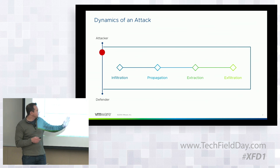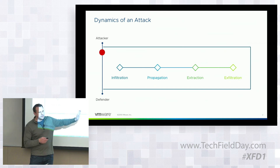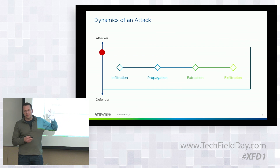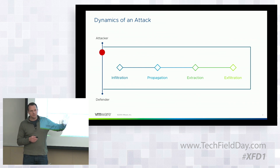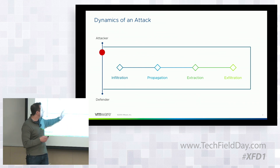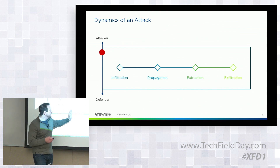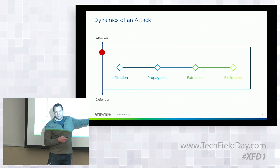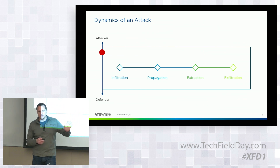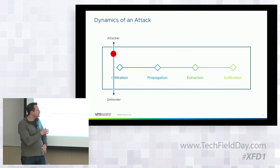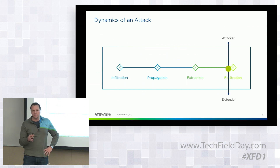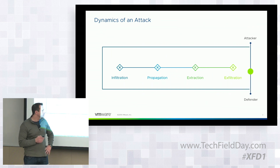We want to deal mostly with things that are in the propagation and extraction phases of attacks, rather than trying to deal with pure infiltration events. We get that question a lot — do you stop a buffer overflow, do you stop a SQL injection attack? The goal is not necessarily to stop those initial infiltration events, but instead stop the ability for an attacker to propagate the attack and extract data afterwards, which should be an easier place for the defender to defend.